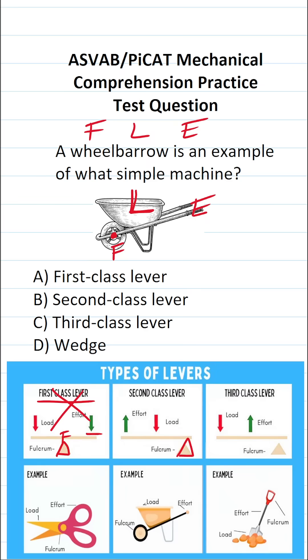In a second class lever, the fulcrum is all the way to one side, the effort is on the outside, and the load is in the middle, and that's what we have here. We have our fulcrum here, we have our load in the middle, and we have our effort on the outside. Therefore, this is an example of a B, second class lever.